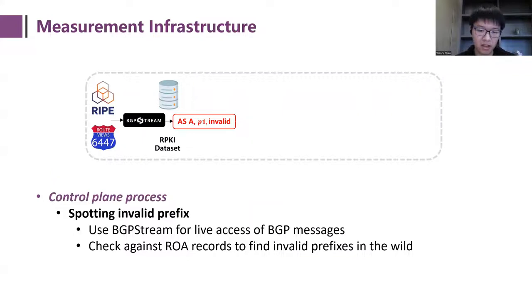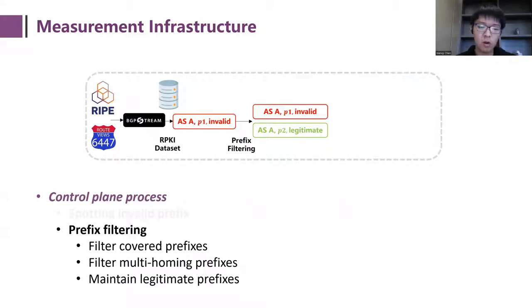In the control plane, the first task is to spot an in-the-wild invalid prefix. We use BGP stream to get live access of BGP messages in the internet, and check each message against ROA records to find invalid prefixes. Note that not all the invalid prefixes can be used for measurement, so we need to filter some of the prefixes before the data plane probing.